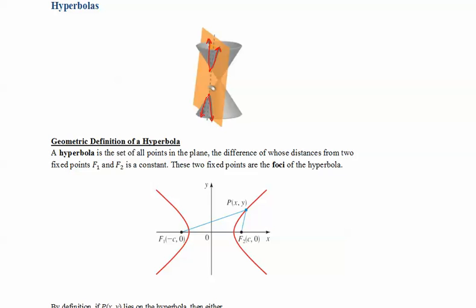So you have one vertex here and here, and the midpoint between these vertices right here in the center is called the center of the hyperbola.